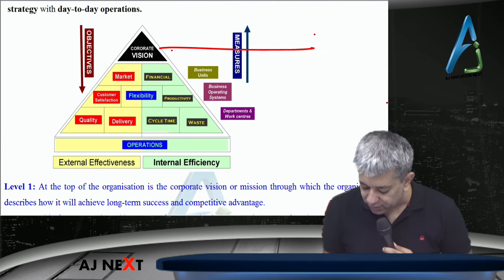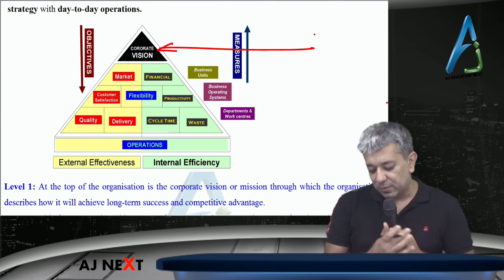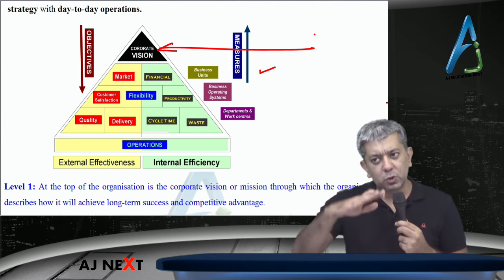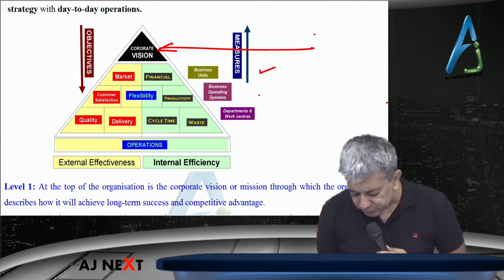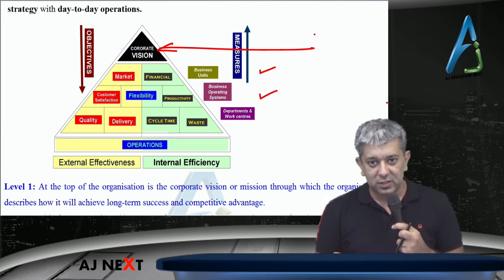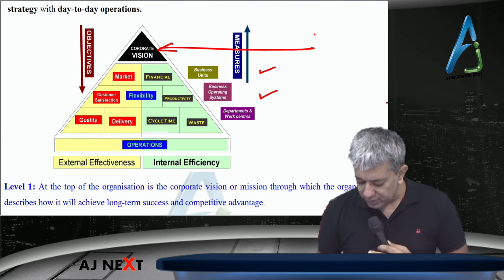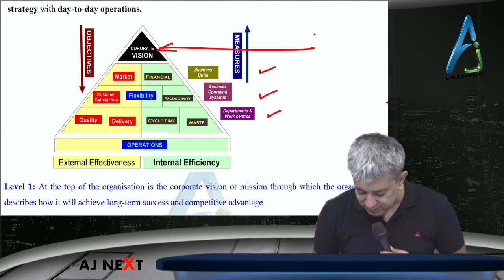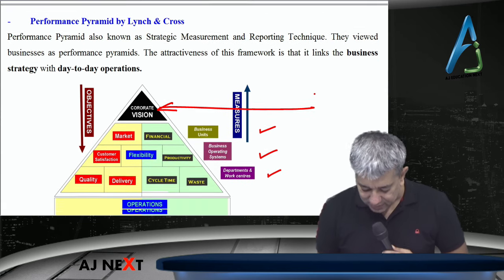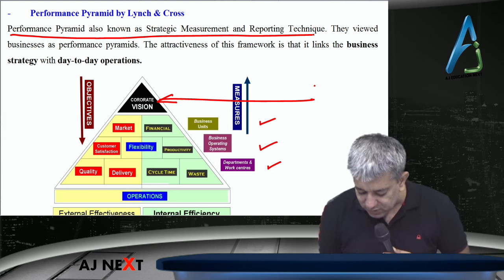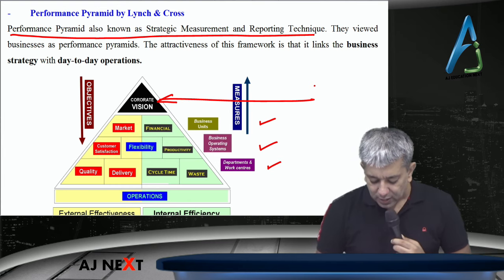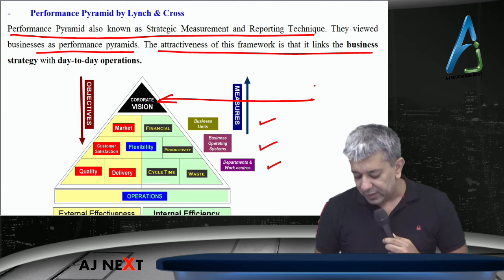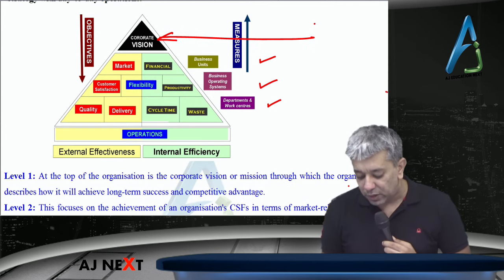Not only that, it was divided into four levels also. The top level is corporate vision. Then to achieve whatever the company wants, there will be hierarchy: business units — those people slightly below top management — then business operating systems, what the company does to make it stronger. And at the lowest level, what operational work is carried out. Performance Pyramid is also known as a strategic management and reporting technique.